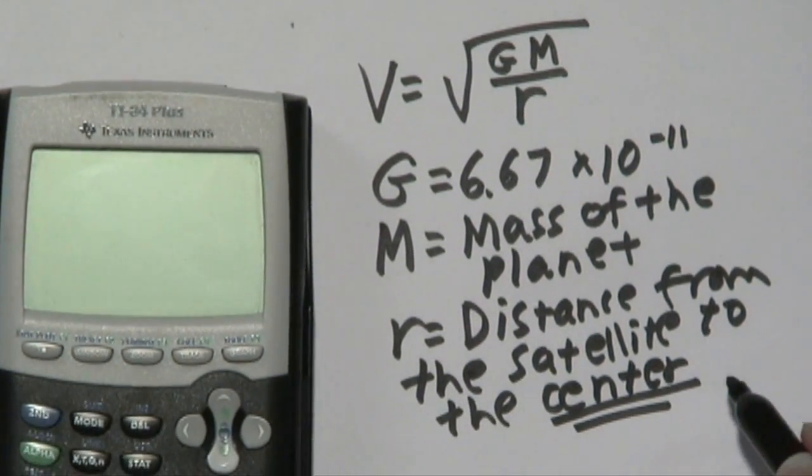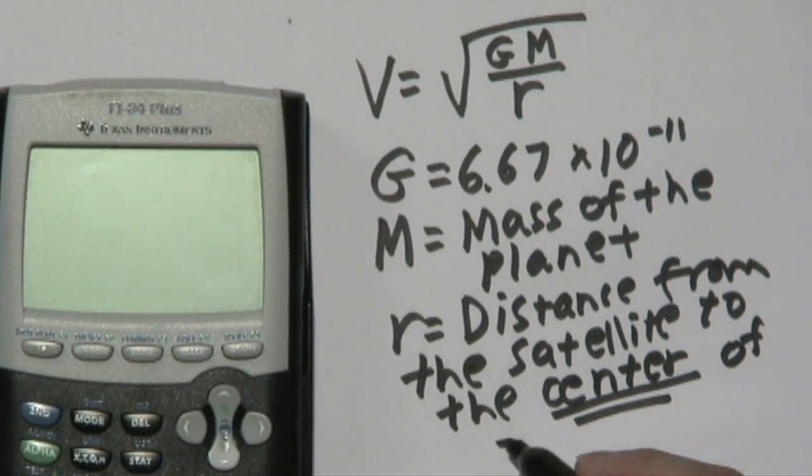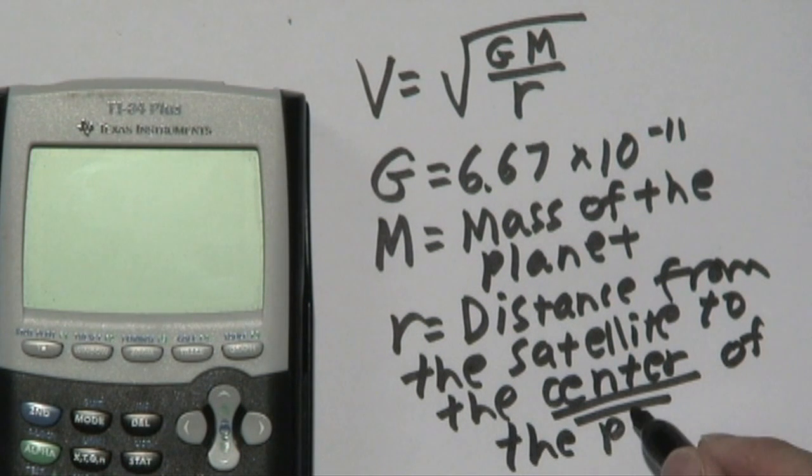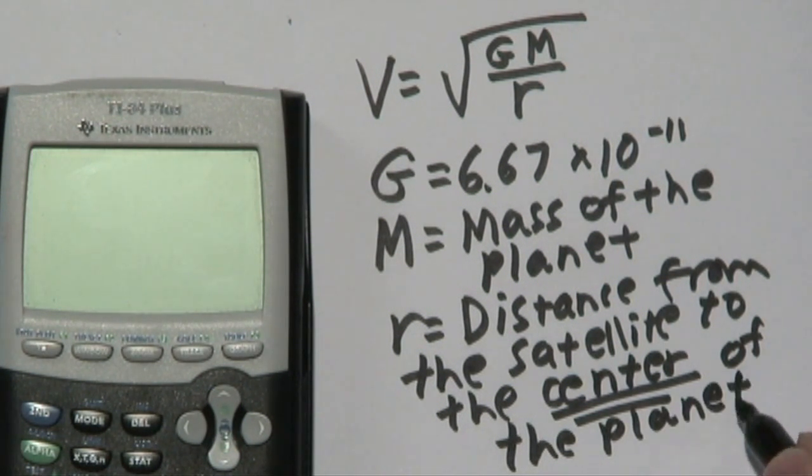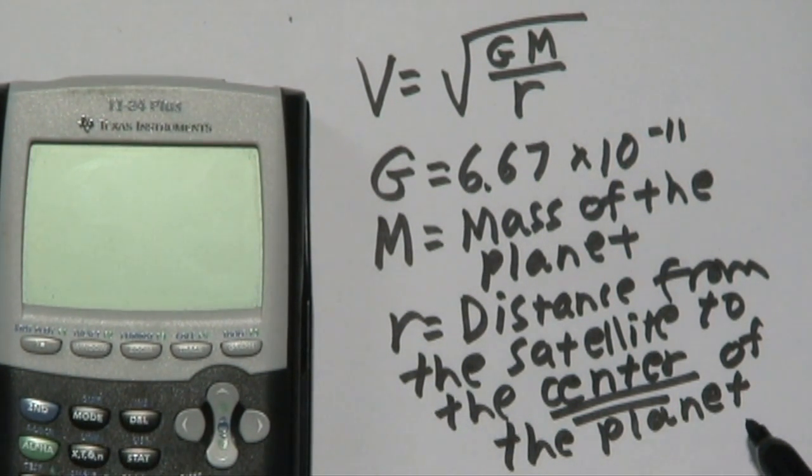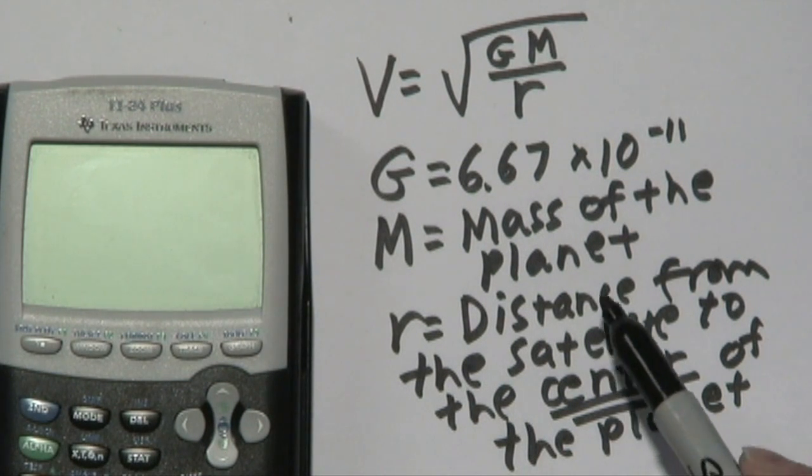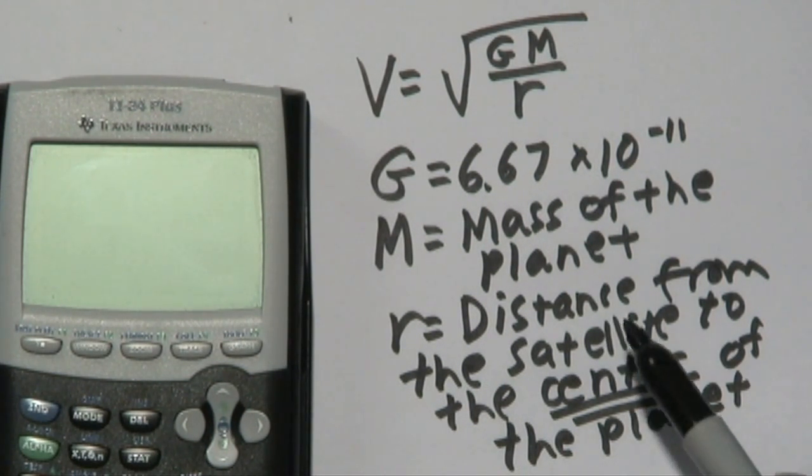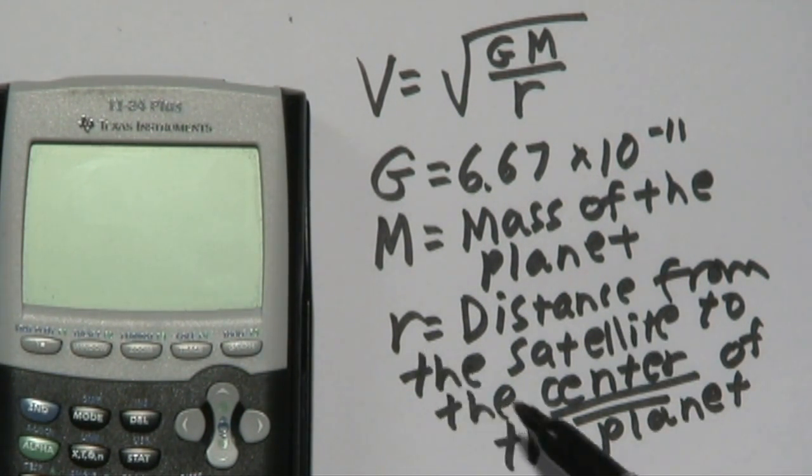The emphasis is on the word center, because a lot of folks will think that all they need is the distance from the surface to the planet. But as you might imagine, because we're talking about the distance from the satellite to the center of the planet, the r is going to be a lot larger than originally thought.